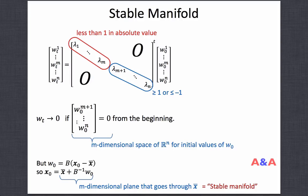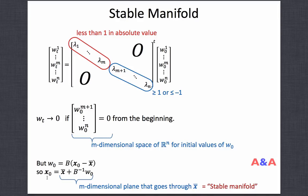The condition that Ws corresponding to lambdas larger than 1 must originally be 0 defines an m-dimensional space in R^n (or C^n) for initial values of W_0. Geometrically, if the system starts with a point located on this subspace, the system will eventually converge to 0; otherwise it diverges. Recalling the definition of W, W_0 = B times the initial deviation of x from x-bar.